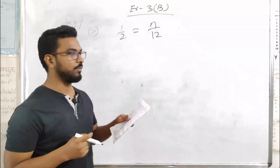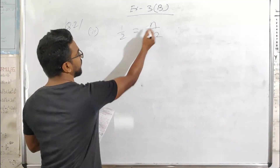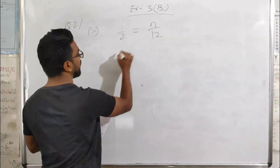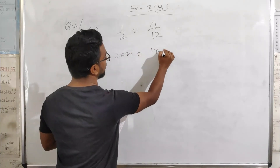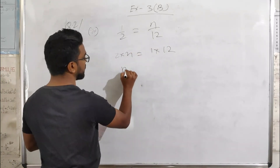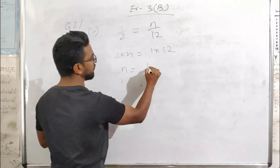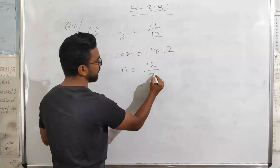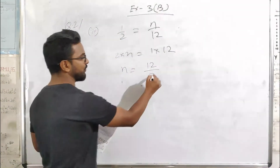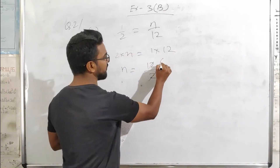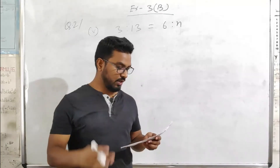The next part gives 1 by 2 proportional to n by 12. Cross multiplying gives 2 times n equals 1 times 12. Taking 2 to the other side by dividing, n equals 6.